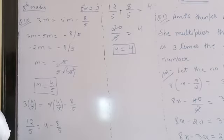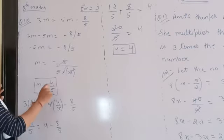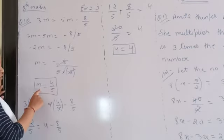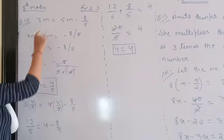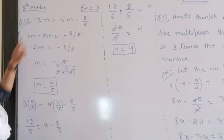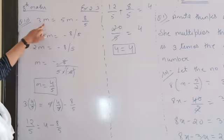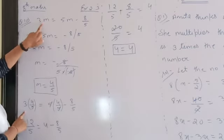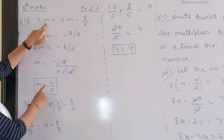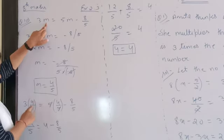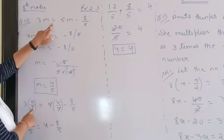The RHS is not going to be here; we have to check the LHS and RHS. We have to check the value of these questions. We have to check the 3 and 5, and also 4 by 5.